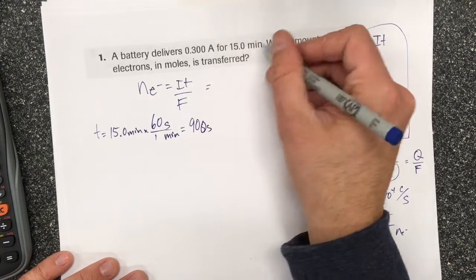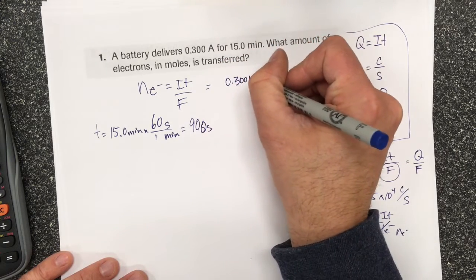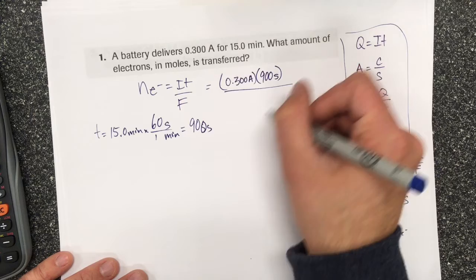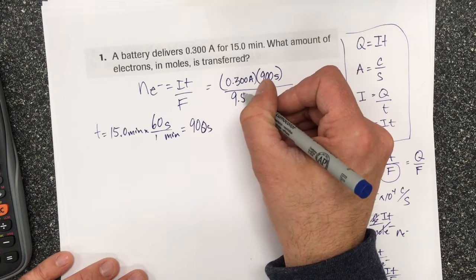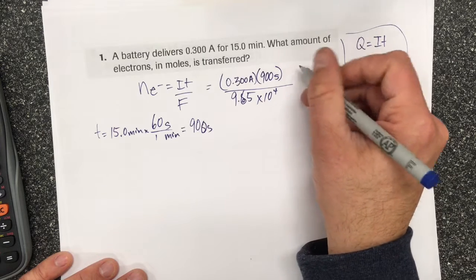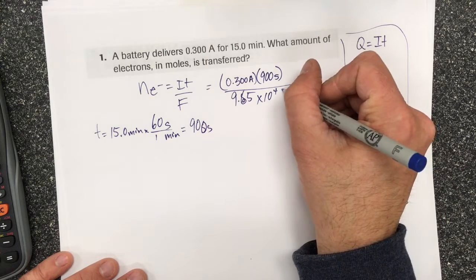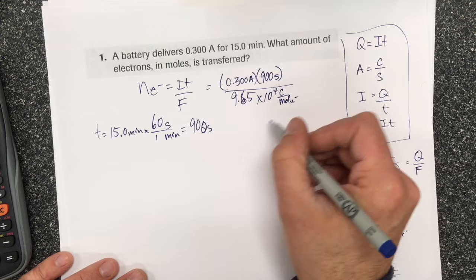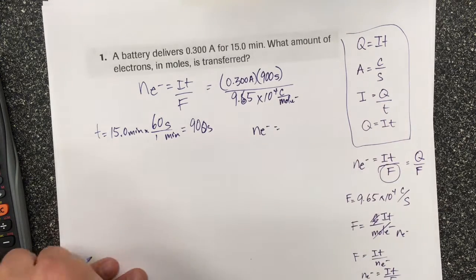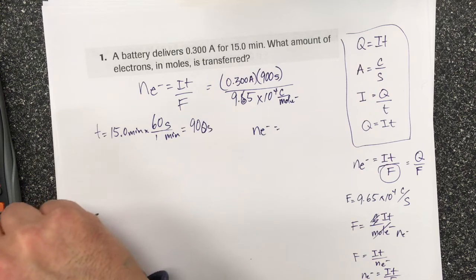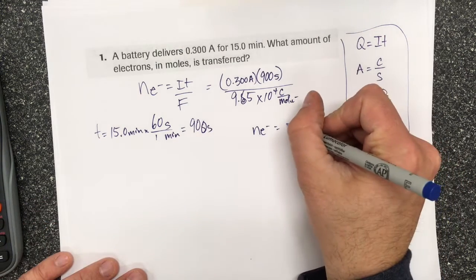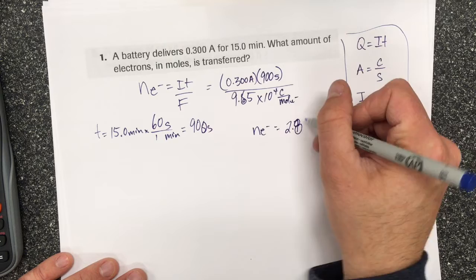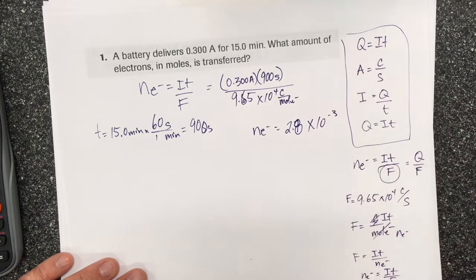So the current is 0.300 amps times the time which is 900 seconds. And I'm gonna divide it by 9.65 times 10 to the 4 coulombs per mole of electrons. And the number of moles of electrons is going to be 0.3 times 900 divided by Faraday's constant, which gives me 2.80 times 10 to the negative 3 mole of electrons.